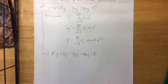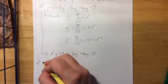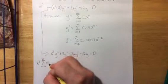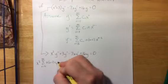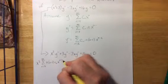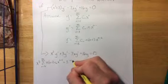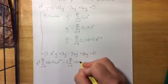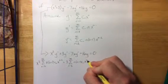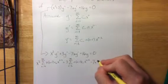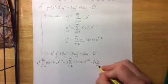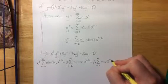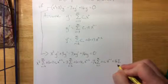Let's plug in all of those things and see what we get. This will be x squared times y double prime, that was the sum from n equals 2 to infinity of n times n minus 1 times c sub n times x to the n minus 2, plus 3 times that same second derivative, then minus 7x times the sum from n equals 1 to infinity of n times c sub n times x to the n minus 1, plus 16 times the original power series.